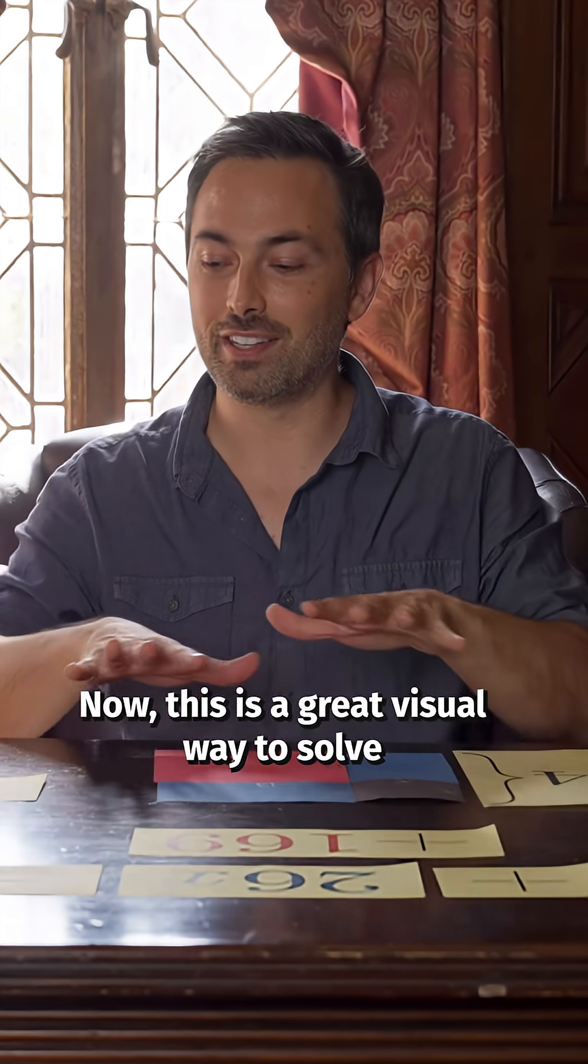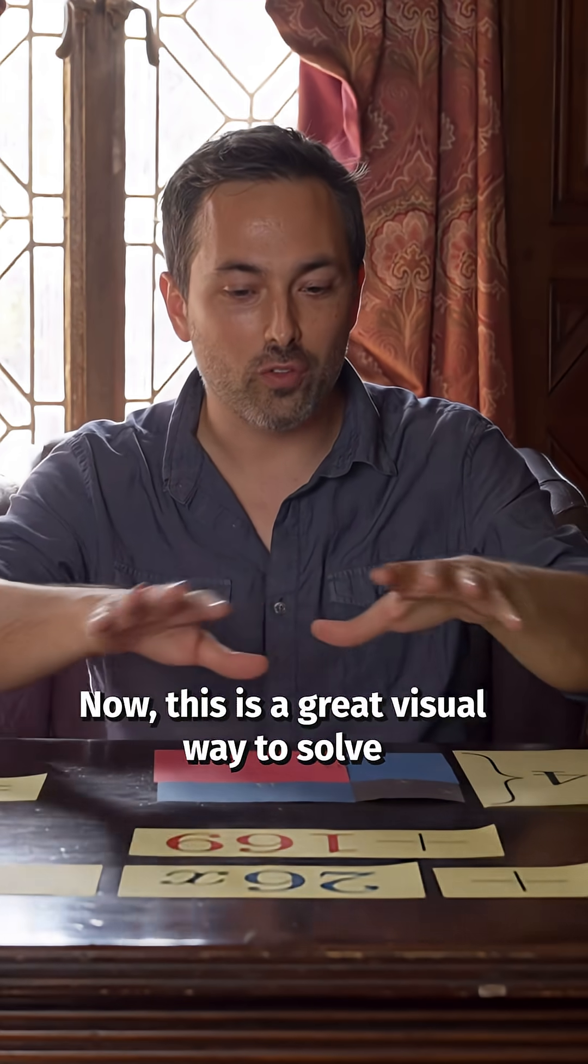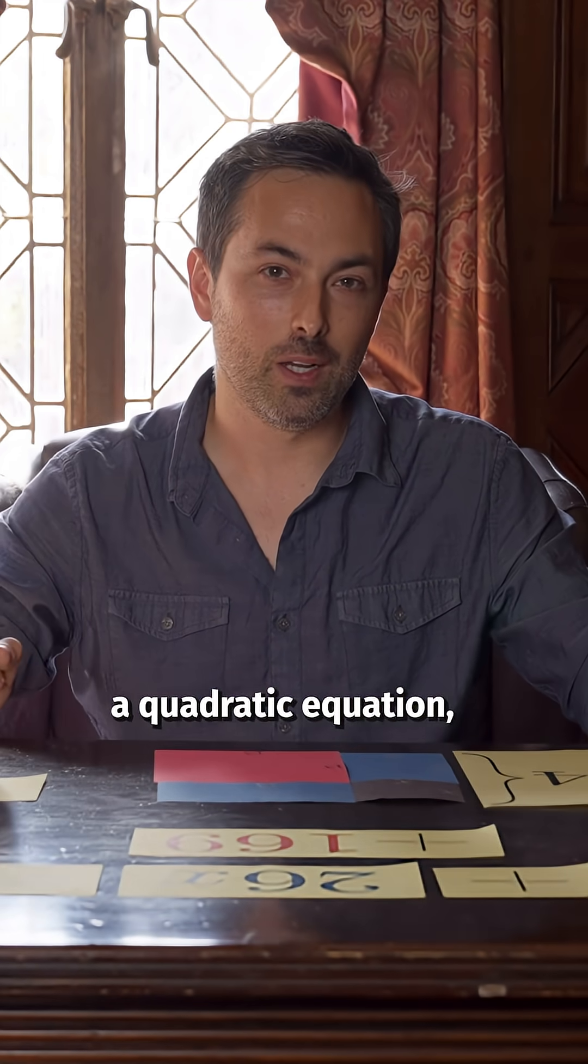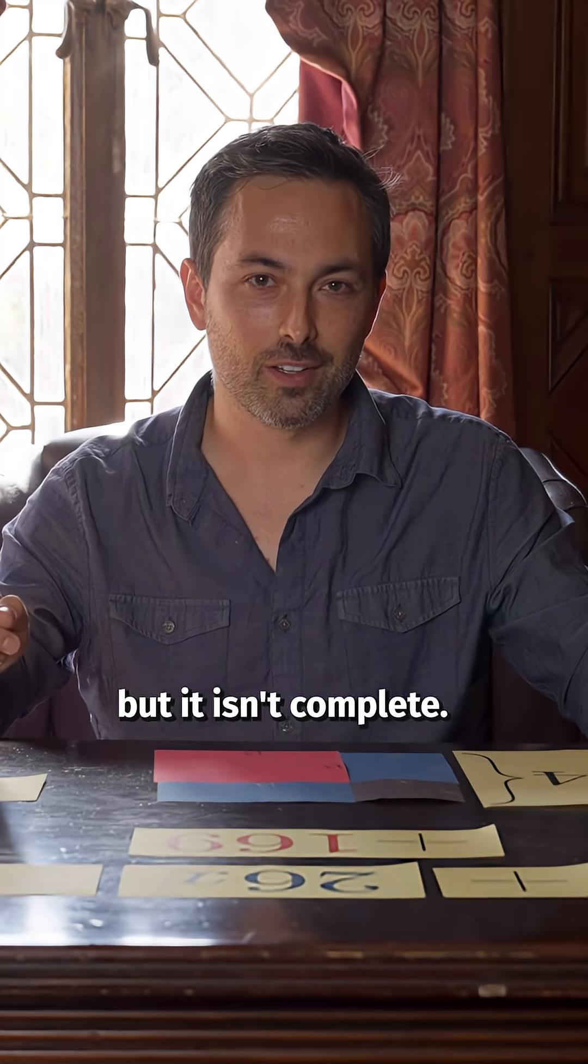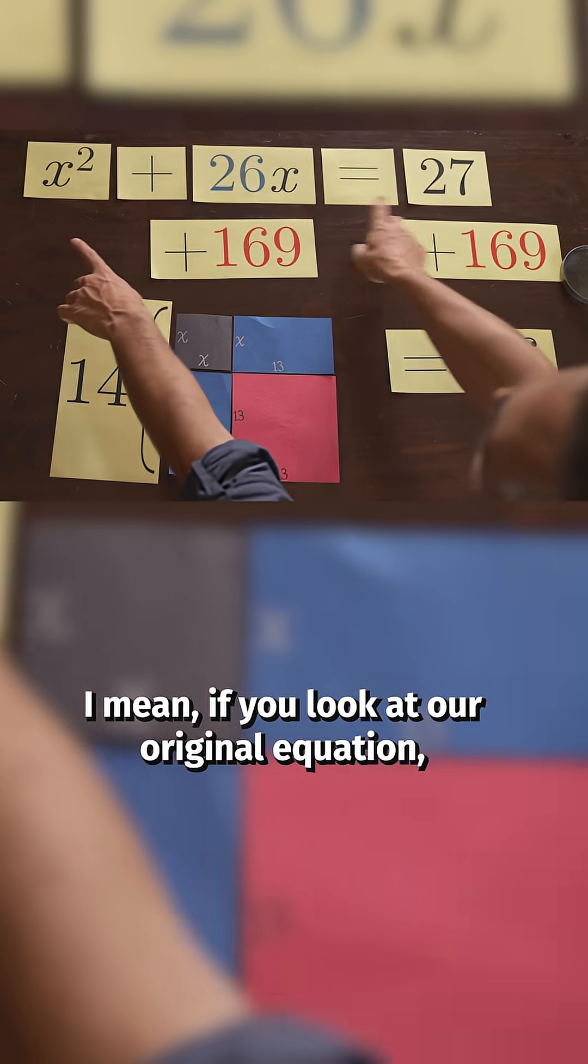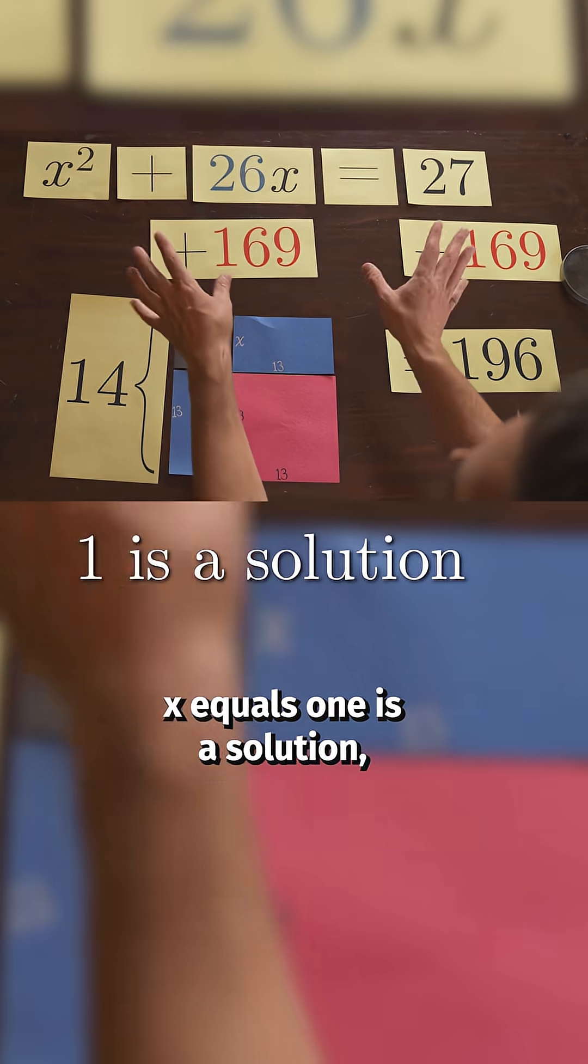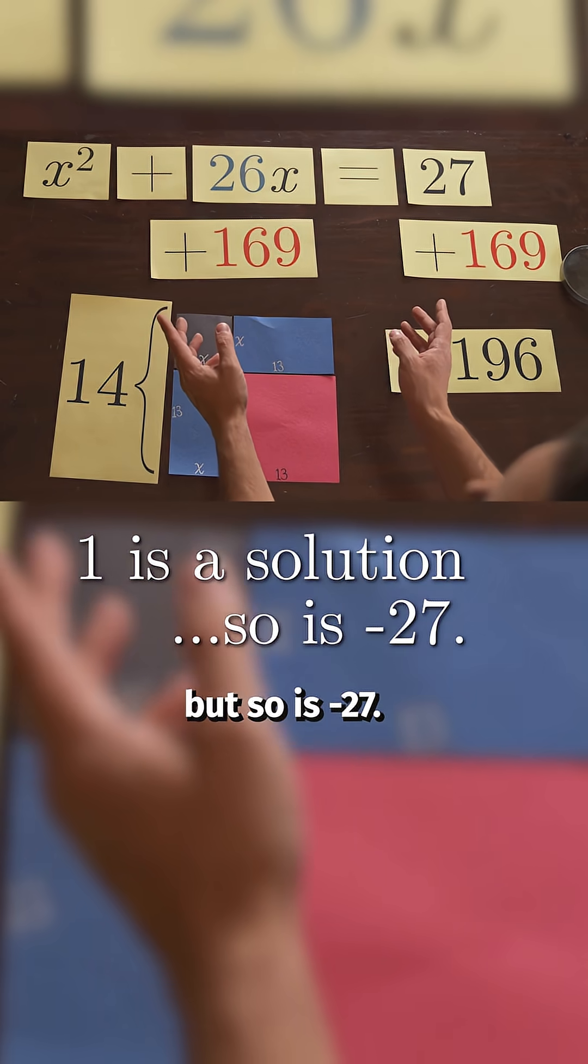Now this is a great visual way to solve a quadratic equation, but it isn't complete. I mean if you look at our original equation, x equals 1 is a solution, but so is negative 27.